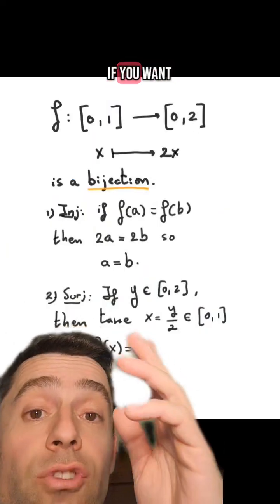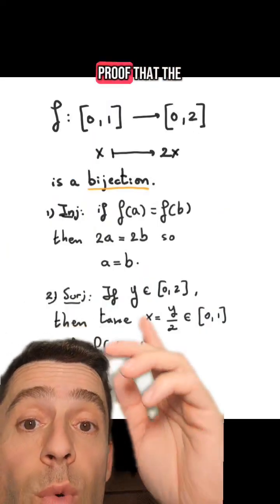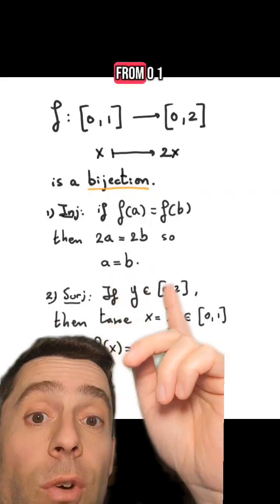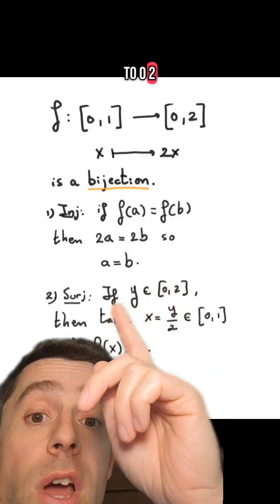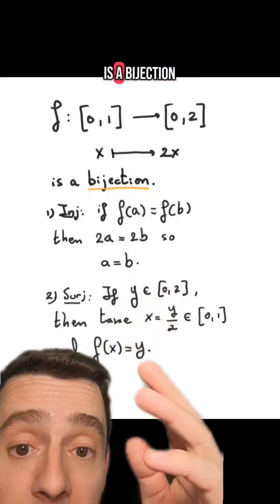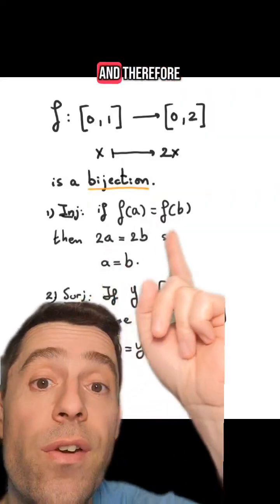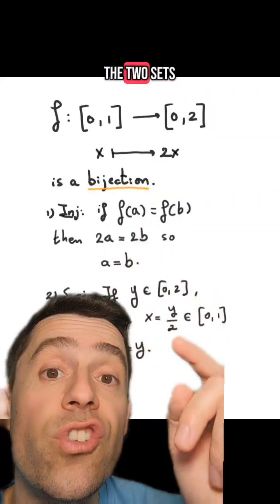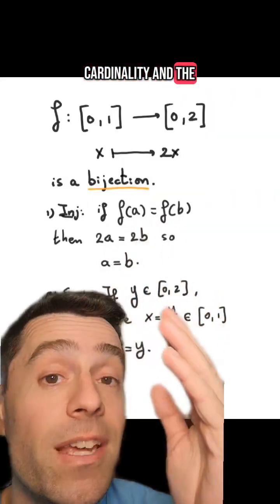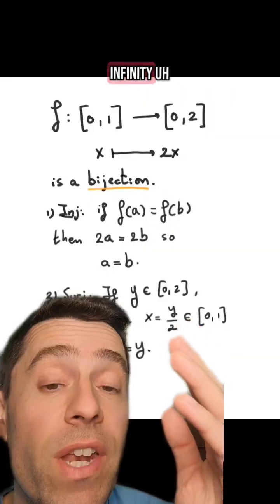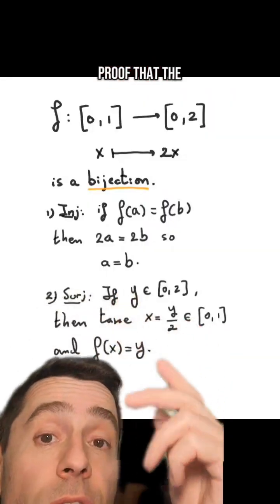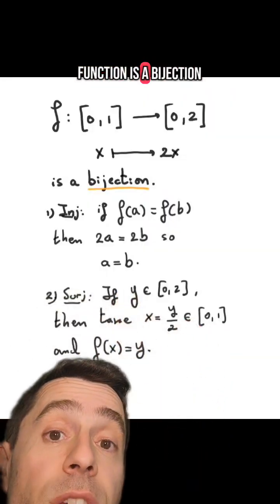And finally, if you want to see the proof that the function from the interval [0,1] to [0,2] that sends x to 2x is a bijection — and therefore the two sets have the same cardinality and the same type of infinity — this is the proof that the function is a bijection.